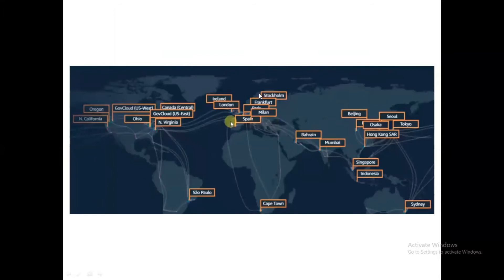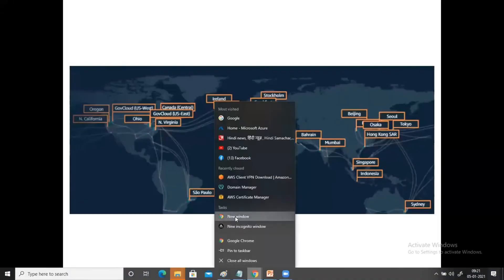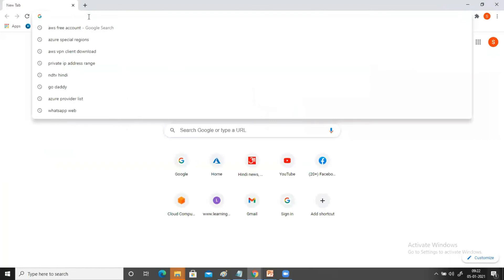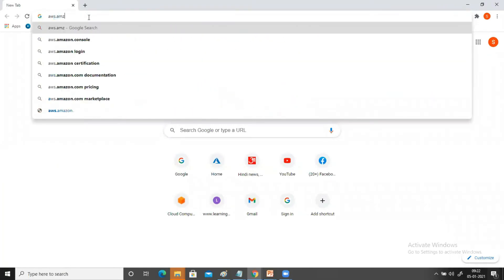Looking at the PPT, you can see different AWS regions in different parts of the world — North Virginia, Mumbai, Singapore. All these regions are interconnected with each other, as shown by the wiring diagram. This represents a high-end private backbone network created by AWS — it's not the public internet, it's a private and very fast network. To access AWS, you go to the portal and type aws.amazon.com.